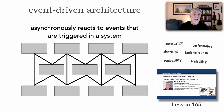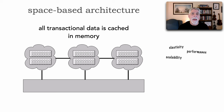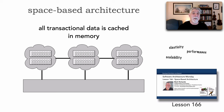Finally, space-based architecture. The shape of space-based is that all transactional data is cached in memory, which gives us perhaps the highest levels of performance, scalability, and elasticity because space-based architecture removes the database from the transactional equation. I describe space-based architecture, how it works, and where it gets its name in lesson 166.